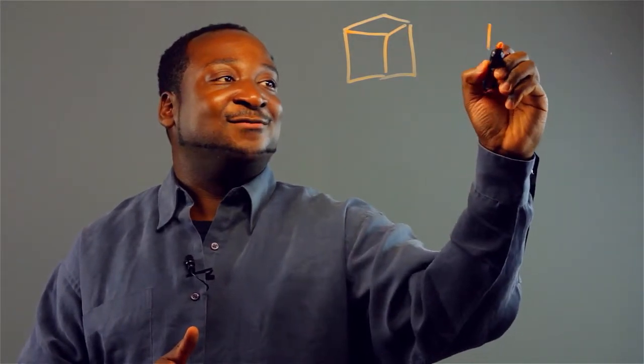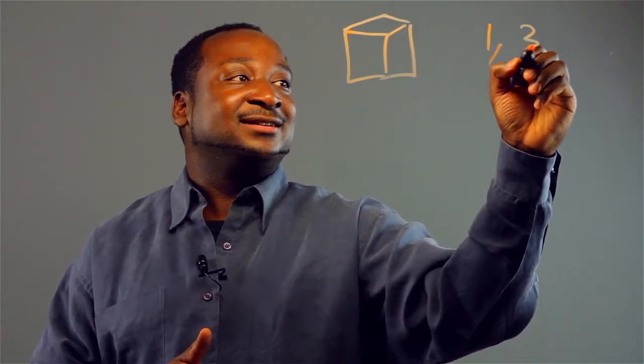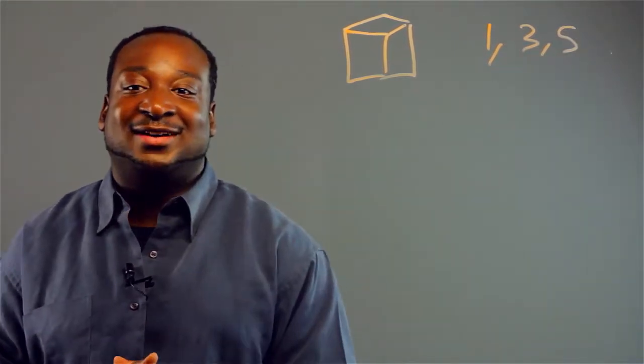So basically odd numbers are one, three, and five.